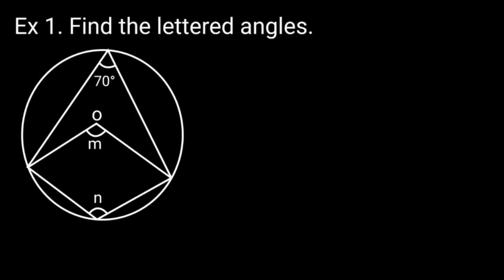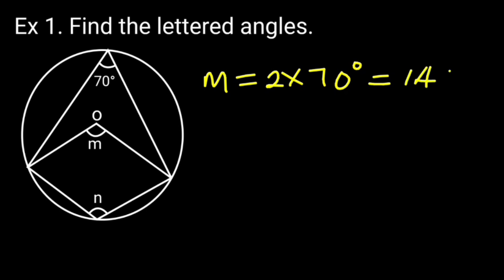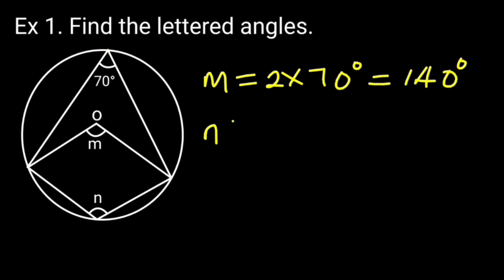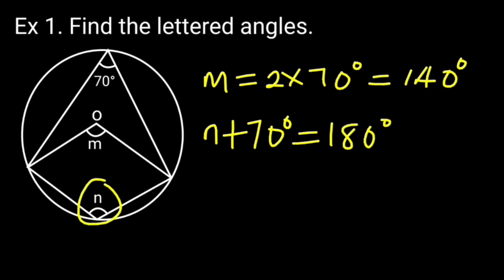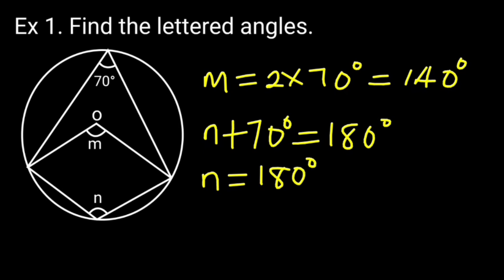Example 1: Find the lettered angles. Solution: M is equal to 2 times 70 degrees, which is 140 degrees. Reason: angle at the center is twice the angle at the circumference. N plus 70 degrees equals 180 degrees — reason: sum of opposite angles of a cyclic quadrilateral is supplementary. Therefore N equals 180 minus 70, which is 110 degrees.